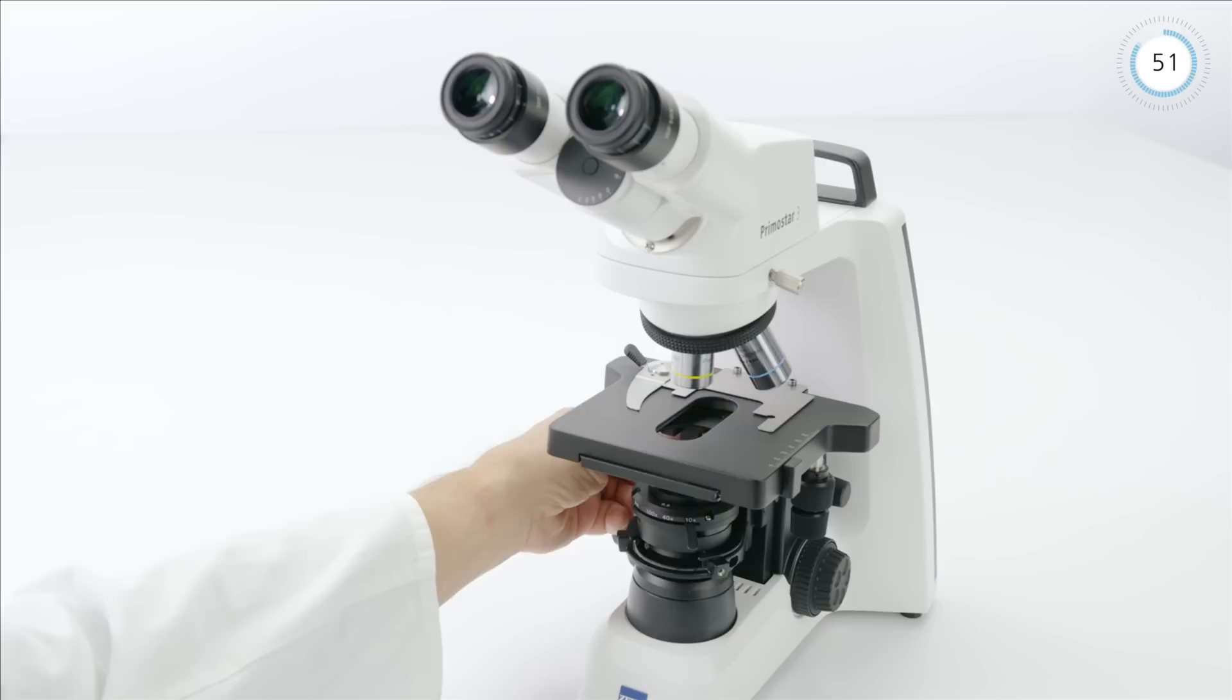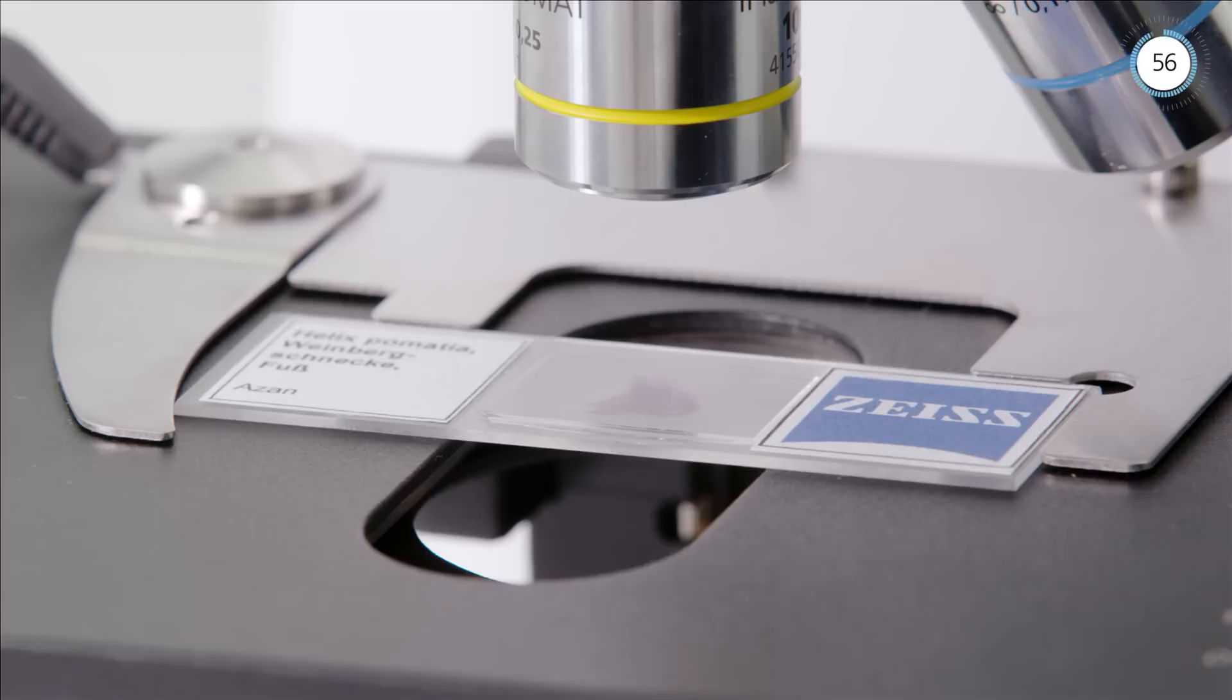Fixed Kohler versions of PrimoStar 3 come pre-adjusted with a field of view of 20mm and a 4x nosepiece.